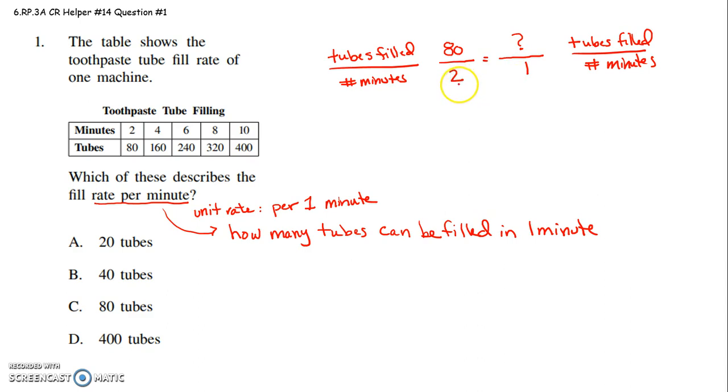So now I have equivalent fractions. And I just look here. I know something about the denominators. Well, how do I get from a 2 to a 1? Well, 2 divided by 2 is 1. What can I do with the 80? If I have to divide the denominator by 2, I must also divide the numerator by 2. 80 divided by 2 is 40. So that means we must be able to fill 40 tubes per minute.